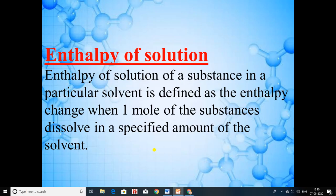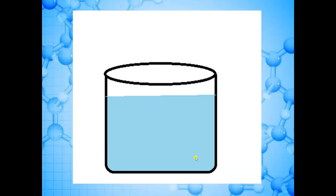We will begin with enthalpy of solution. Suppose there is a solvent and energy of this solvent is U1. When we dissolve a substance in this solvent, then what will happen? After dissolution, energy of the system will change. Now the energy of the solution is U2. So this change in energy is known as enthalpy of solution, or enthalpy change of the solution.